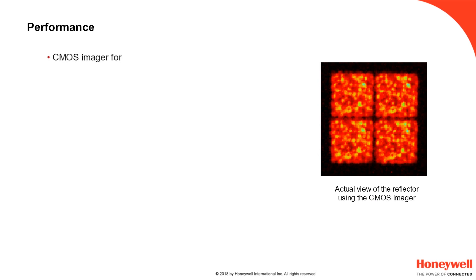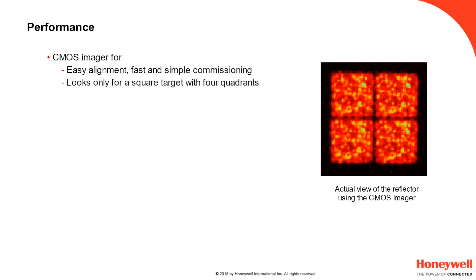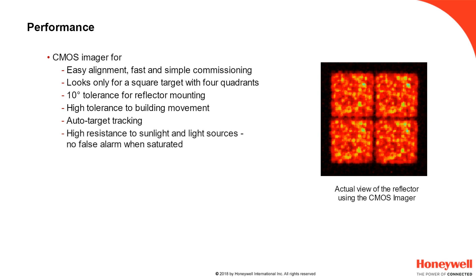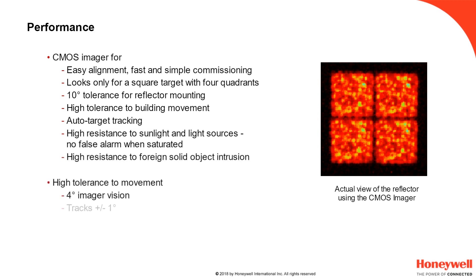One of the keys to the OSID R's performance is its use of a CMOS imager rather than the traditional photo receiver. A photo receiver has an effective resolution of 1 by 1 pixel. The CMOS imager has many thousands of pixels and produces an image of the field of view seen by the device, which the software can interrogate and interpret. This interpretation allows the simple alignment process and supports tolerance to alignment issues, building movement, and false alarms caused by sunlight or intrusion.